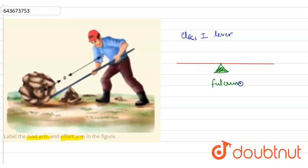On the left hand side, this is the load. On the right hand side is the effort that the man is making. So the distance from load to fulcrum is the load arm.